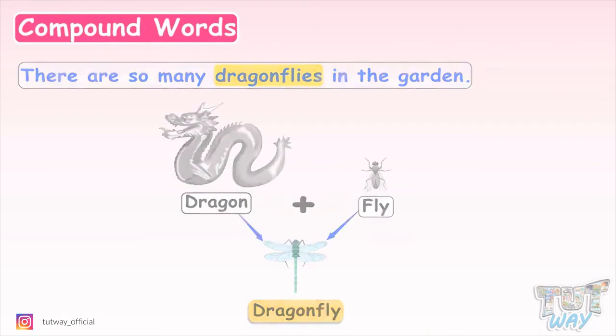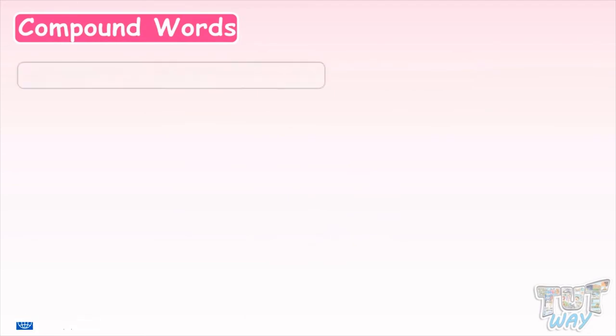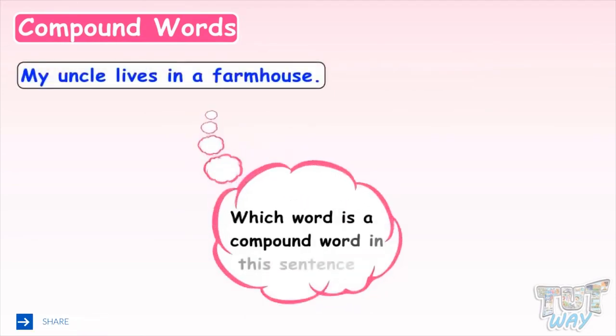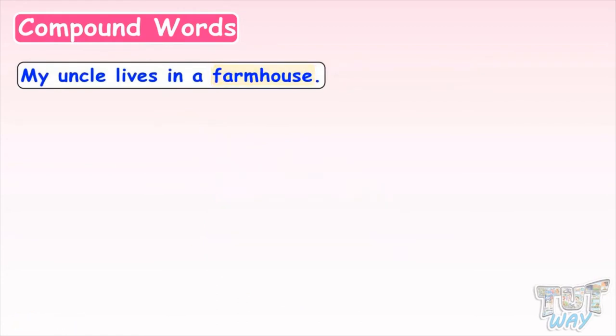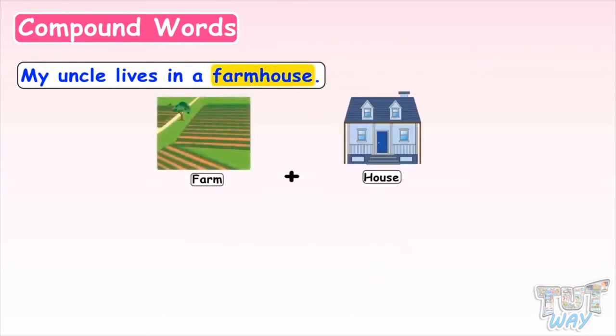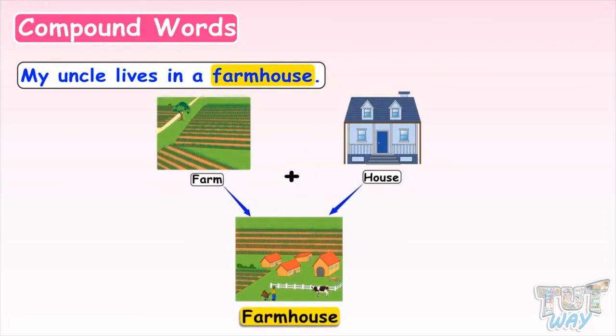Here is another sentence. My uncle lives in a farmhouse. Which word is a compound word in this sentence? It's farmhouse. Farm and house combined together make farmhouse.